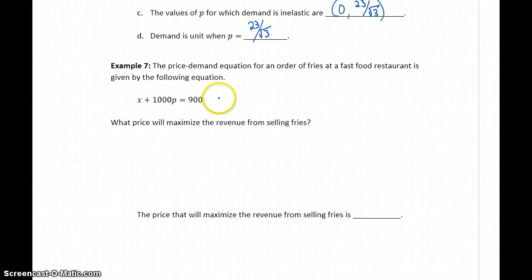So the first thing we need is this price-demand function to be written in terms of p. So we need to solve that for x, which would give us 900 minus 1000p. From there, we can generate an elasticity of demand function. So to find the price point that will maximize our revenue means we want to take that elasticity of demand function and set it equal to 1 because that's where we have unit demand.